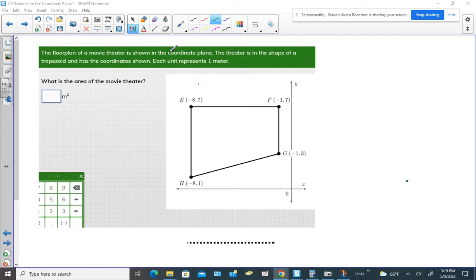The floor plan of a movie theater is shown in the coordinate plane. The theater is in the shape of a trapezoid and has the coordinates shown. Each unit represents one meter. What is the area of the movie theater?